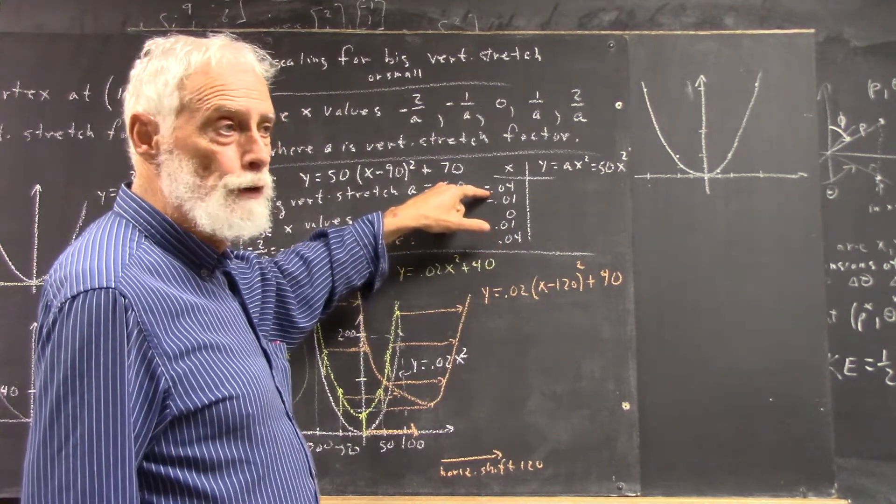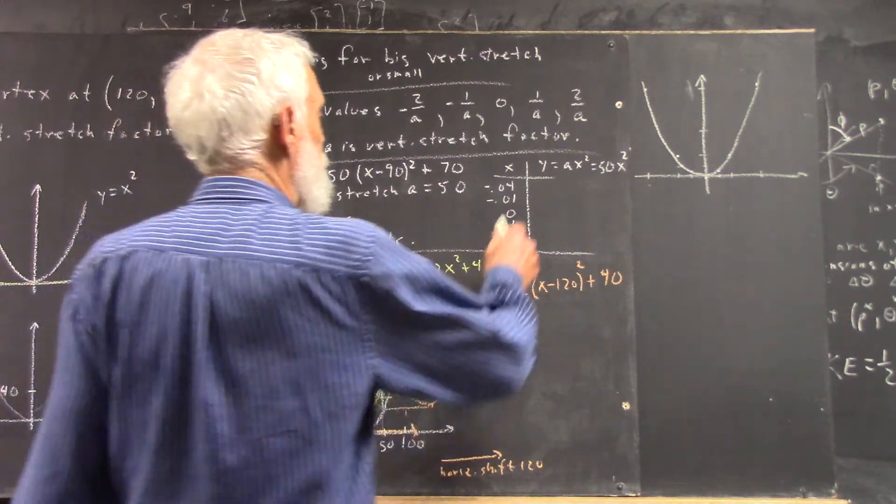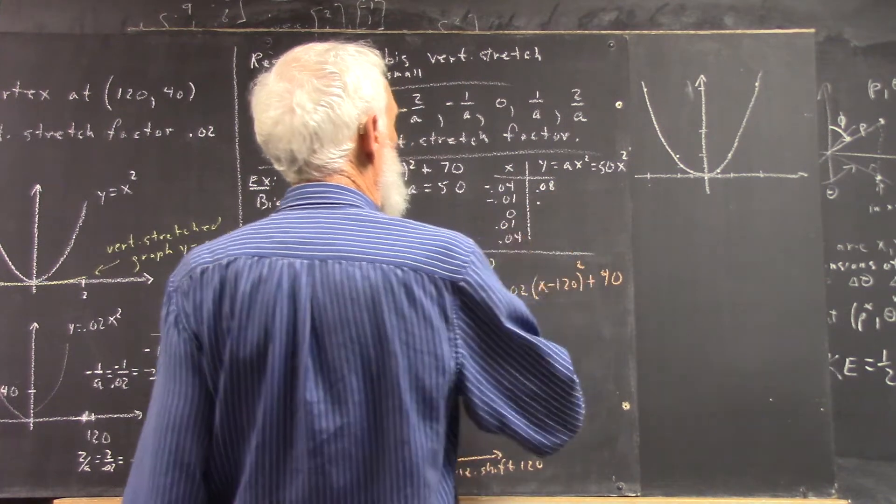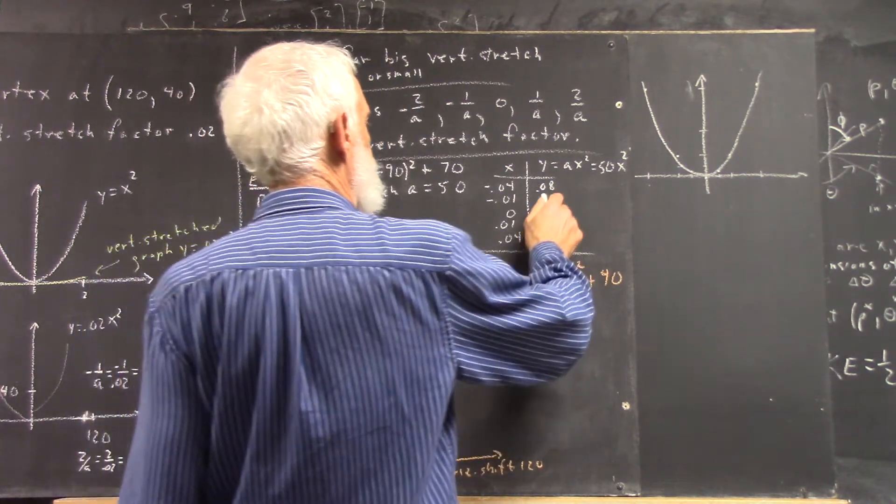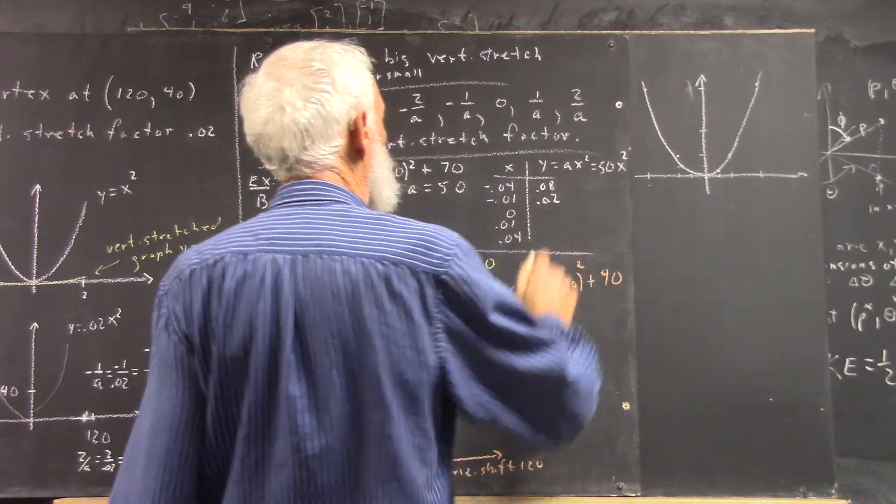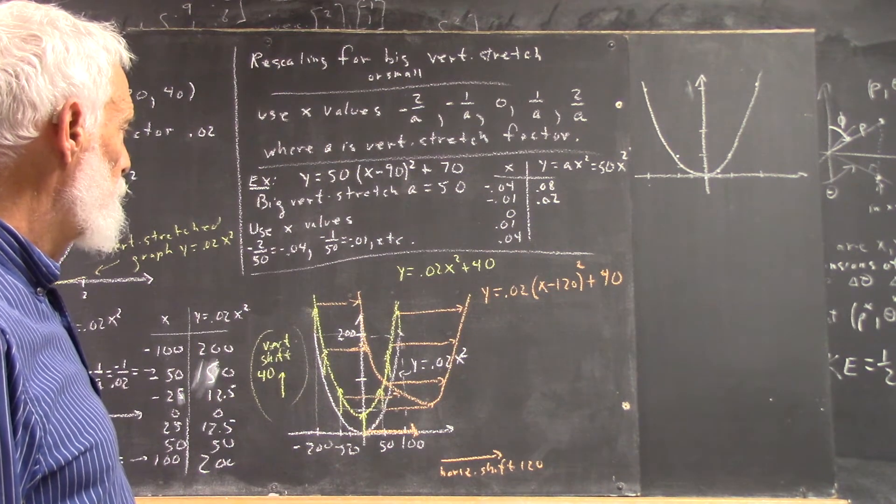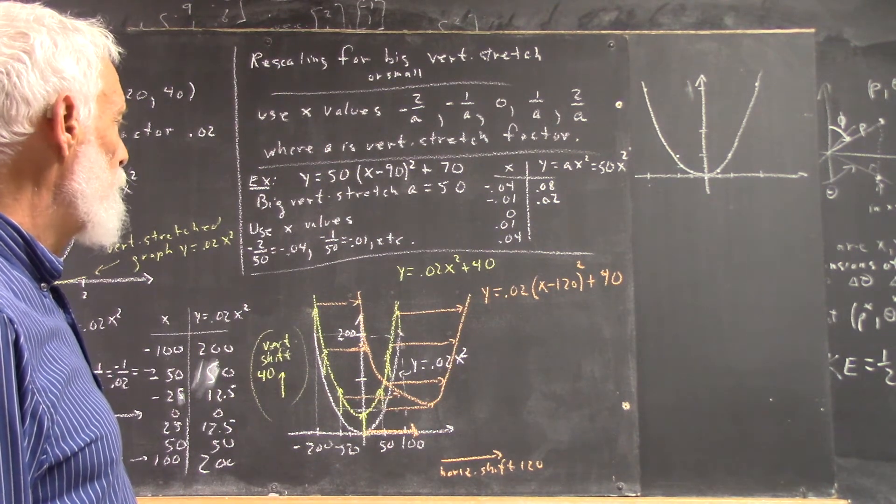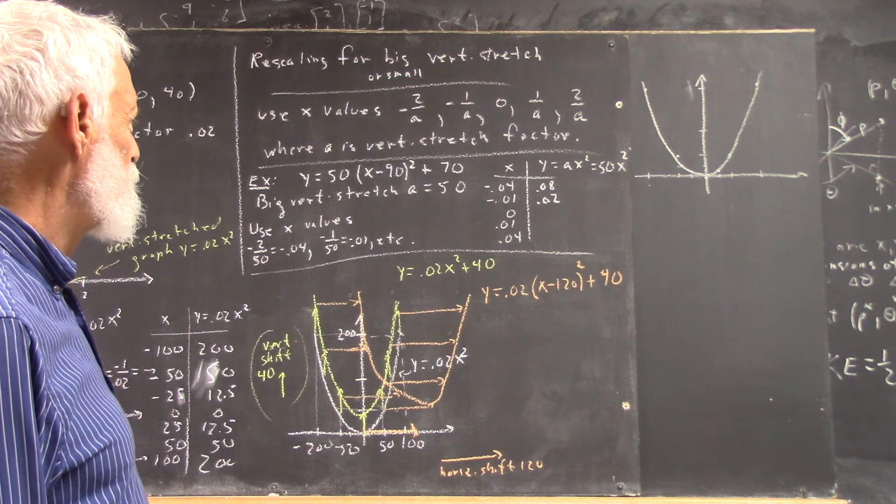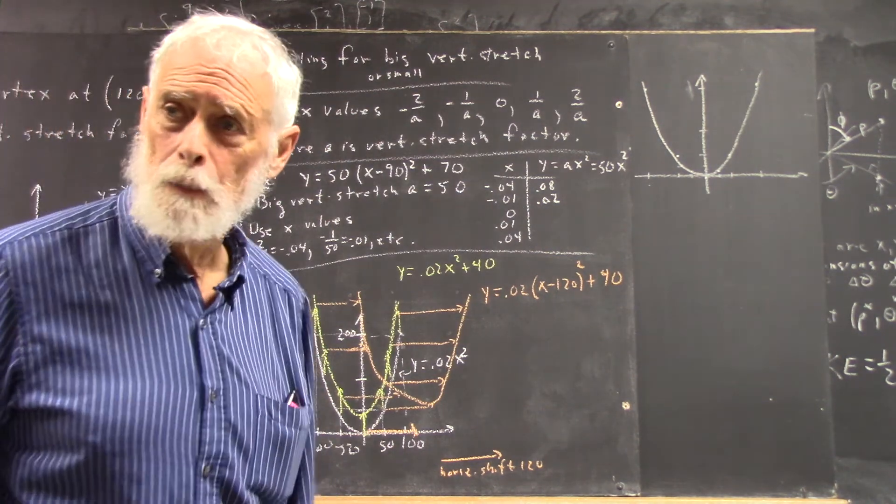0.04 times 50 is 2, and 0.04 times that is 0.08. This should be one-fourth but that should be 0.02. But it isn't, so maybe I did my arithmetic wrong. 50 times 10 thousandths is 0.005. A few times that, eight. Okay, I'm going to turn the camera off, because it's just getting embarrassing.